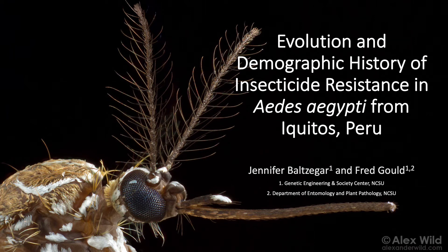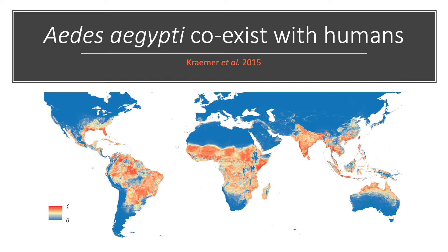Hi, I'm Jennifer Baltzegar and I'm a postdoc in Fred Gould's lab in the Genetic Engineering and Society Center at NC State. Today I'll give a quick discussion on the evolution and demographic history of insecticide resistance in Aedes aegypti from Iquitos, Peru. Aedes aegypti is a species of mosquito that originated in Africa and has spread to most of the tropical and subtropical regions of the world.